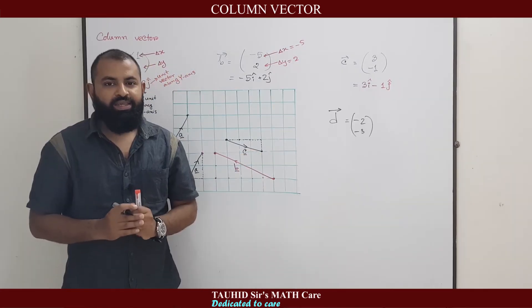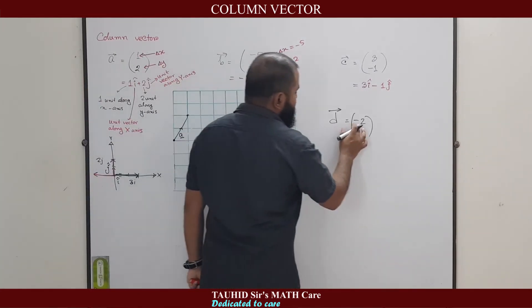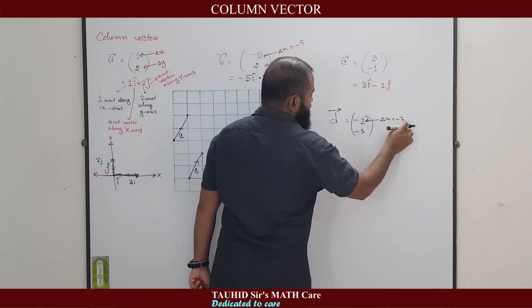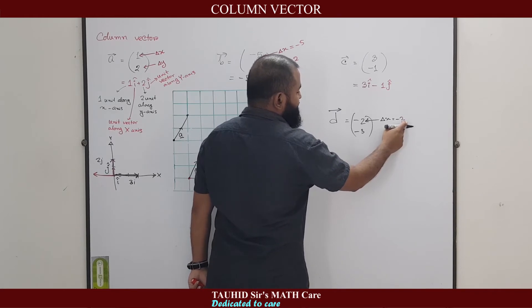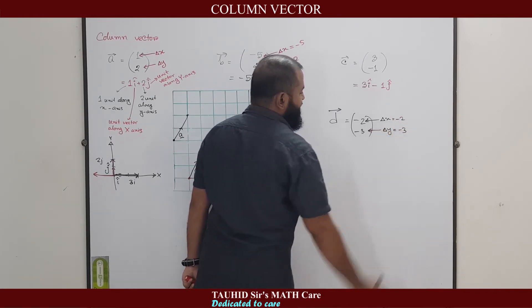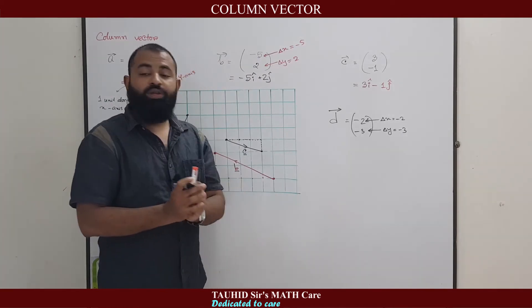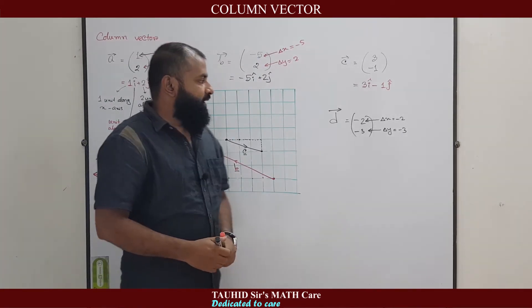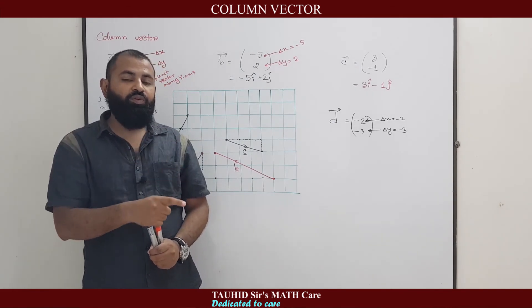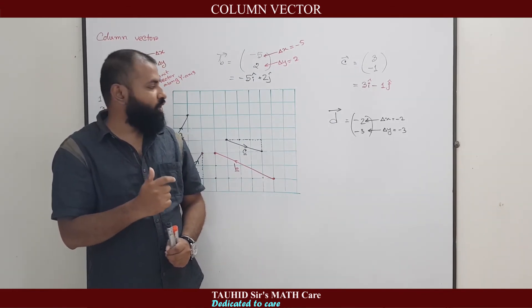Now let's see another vector: D minus 2, minus 3. That means here delta x is minus 2, it will move two units left. Delta y equals minus 3, it will move three units downward. Negative x means left, positive x means right. Negative y means down, positive y means up.